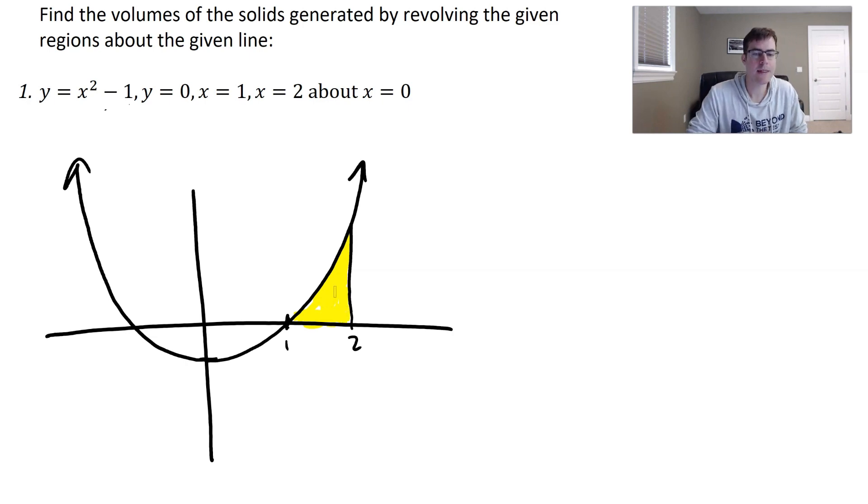because it's also bounded by y equals zero, which is just the x-axis there. So we're going to rotate that region about the line x is zero. Now x is zero, we know is just our y-axis here. This is the line x is zero.